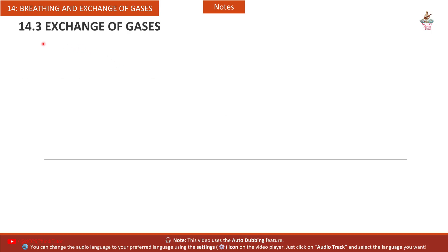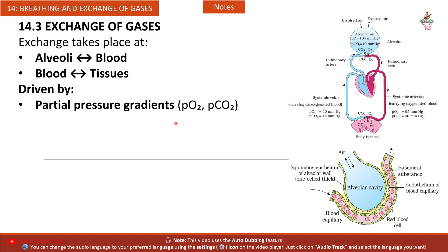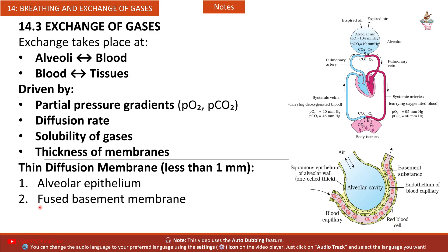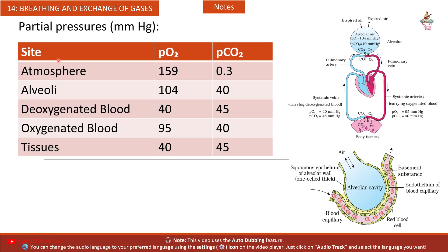Section 14.3 — Exchange of Gases. Exchange takes place at alveoli to blood and blood to tissues, driven by partial pressure gradients (pO2, pCO2). Diffusion rate depends on solubility of gases and thickness of membranes. The thin diffusion membrane is less than 1 mm and consists of: alveolar epithelium, fused basement membrane, and capillary endothelium. Partial pressures (mmHg): Atmosphere — pO2: 159, pCO2: 0.3. Alveoli — pO2: 104, pCO2: 40.